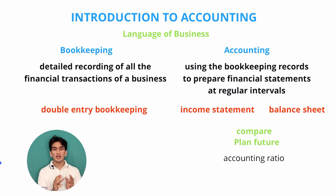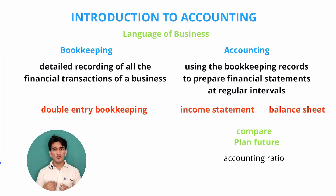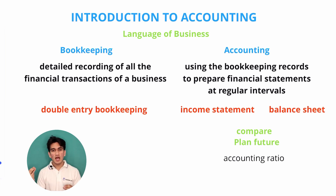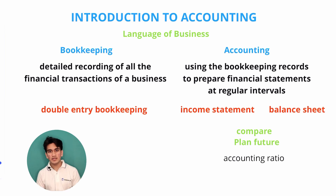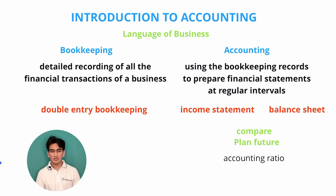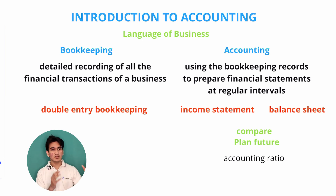Another important element is accounting ratios. Accounting ratios use two or more figures from financial statements to show different ratios, helping compare business performance and plan for the future — for example, showing the amount of liabilities compared to assets. We will learn about this in much more detail in future videos. In the next video, we learn about assets, capital, and liabilities.